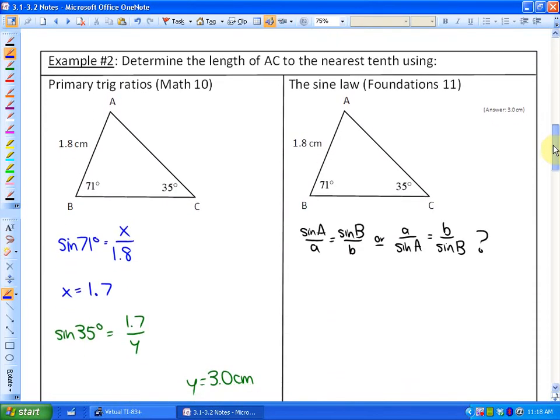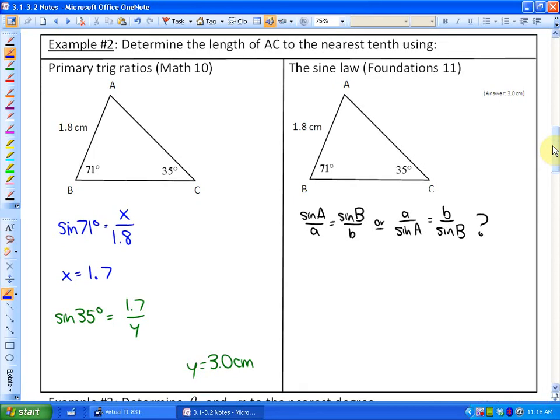Now let's look at an actual example, an application of the sine law. This question says that we're going to determine the length of AC. And what you'll notice here is that these are both the same questions. They'll be approached in two different ways. We're going to determine this length AC, which is right here, to the nearest tenth. And we're going to do that in two methods. We're going to use the math 10 method and we're also going to use the sine law or the math 11 method. And at any point in time, you can pause this, try it on your own. Now if you're in math 10, you have to use right triangles.